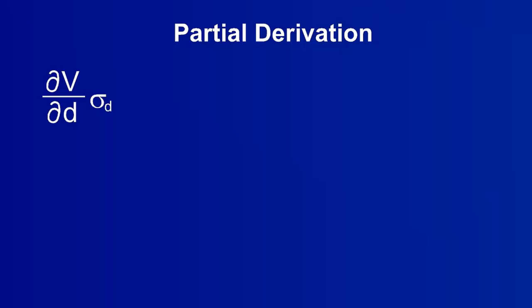Sigma sub d is the uncertainty of our distance measurement. This other term indicates to take the partial derivative of the velocity, v, with respect to the distance, d.